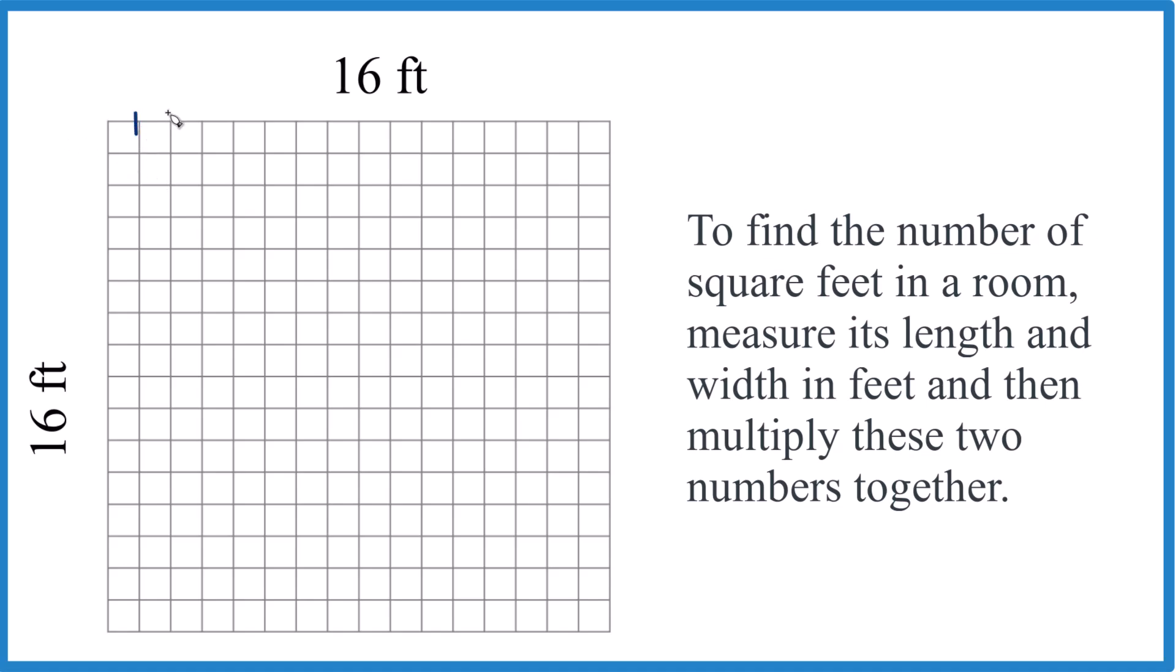So in our graph here we have one, two, three, four, and if you count it up, 16. Going down we have one, two, three, four, five, you count it down, 16.